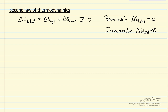Notice that in this process, the system entropy change could be negative and the surroundings could be positive at a larger magnitude, so the sum of them is greater than zero. So it's possible for a process to have a negative entropy change for the system.